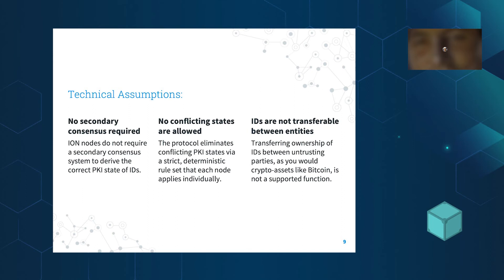Technical assumptions: there's no secondary consensus required. Bitcoin and IPFS having the data is really the only consensus necessary — nodes don't talk and come to agreement on anything through a Byzantine protocol. They can be in agreement mathematically. No conflicting states are allowed — Alice and Bob's IDs can't change each other's state. And IDs are not transferable: you can't send Bob your ID.